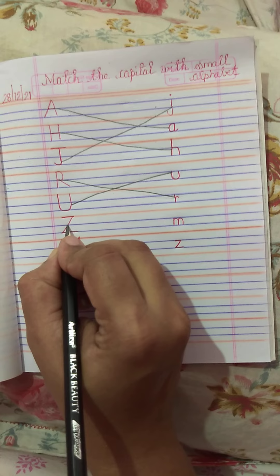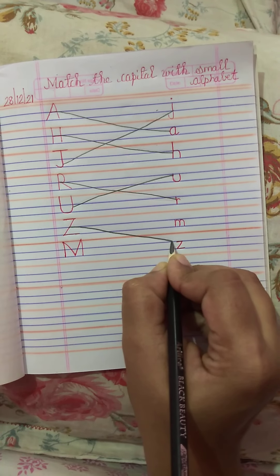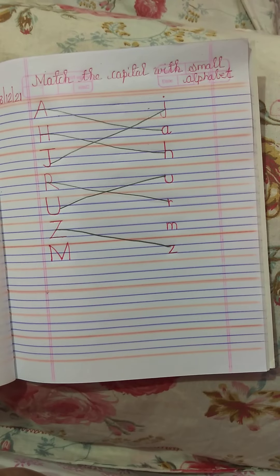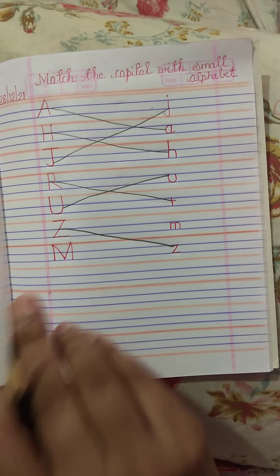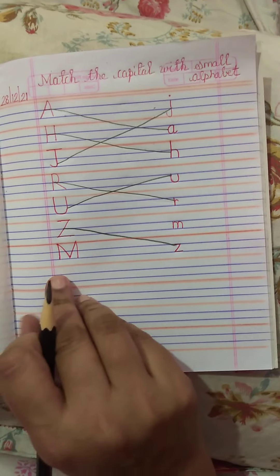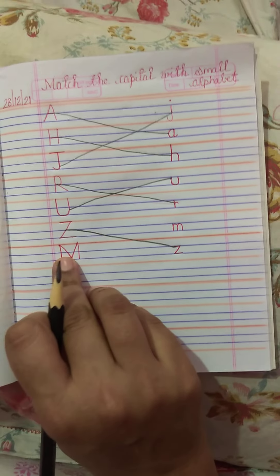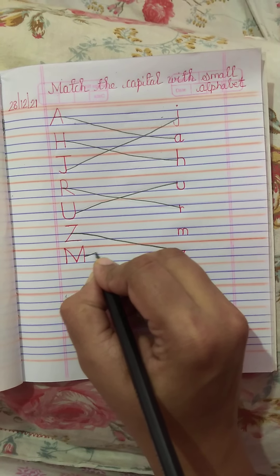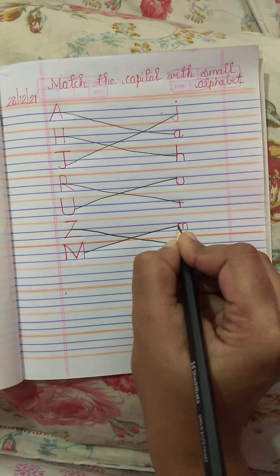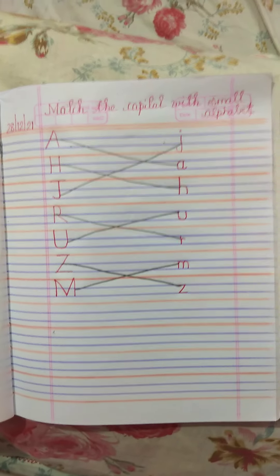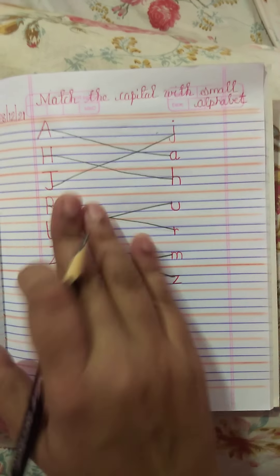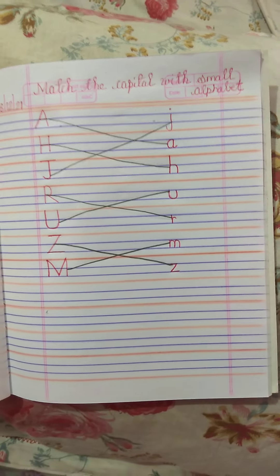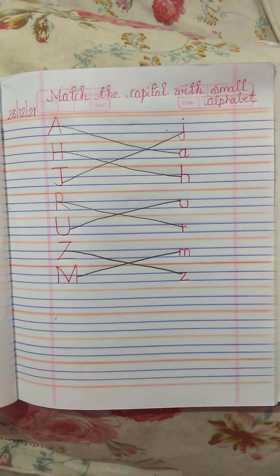So now children, our last letter is capital M. You have to match capital M to small m by drawing a line from capital M to small m. I hope you all understood how to match capital with small alphabet. Right children? Bye, take care. Have a nice day.